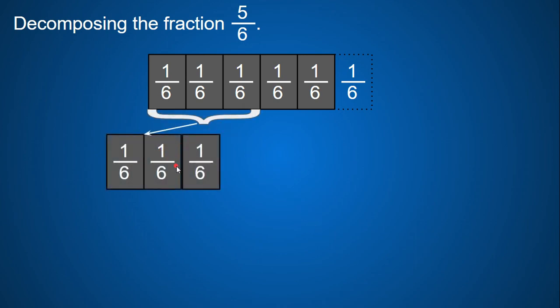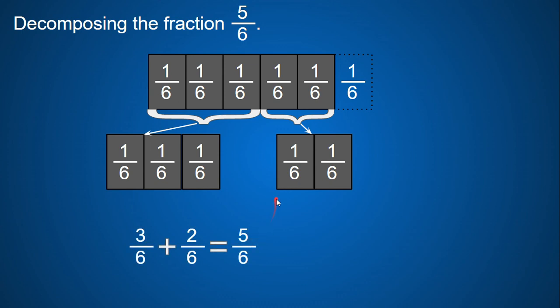And I can do three-sixths and break this into two-sixths. So it's three-sixths plus two-sixths gives me five-sixths.